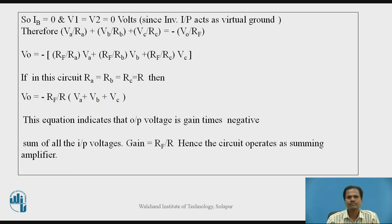Since voltage at inverting input V-2 is zero volts, the output voltage simplifies to: V-O equals minus [R-F/R-A × V-A + R-F/R-B × V-B + R-F/R-C × V-C]. If all input resistors are equal — R-A equals R-B equals R-C equals R — then the output voltage becomes V-O equals minus (R-F/R) × (V-A plus V-B plus V-C). This indicates output voltage is gain times the negative sum of all input voltages, with gain equal to R-F/R. Hence, this circuit operates as a summing amplifier.